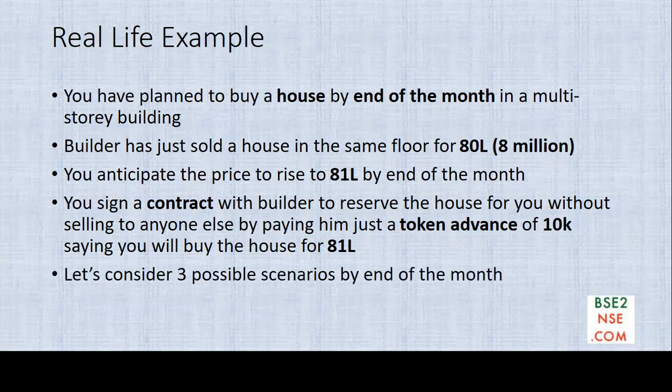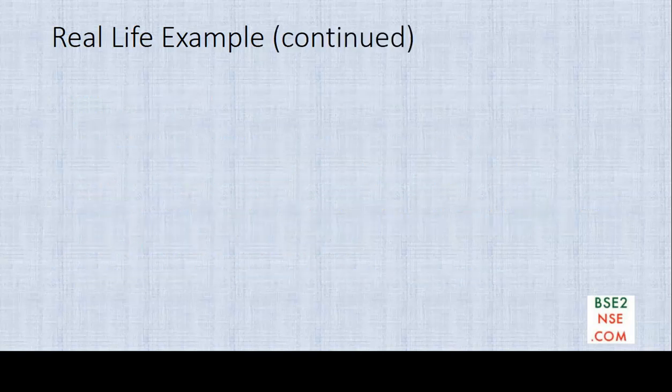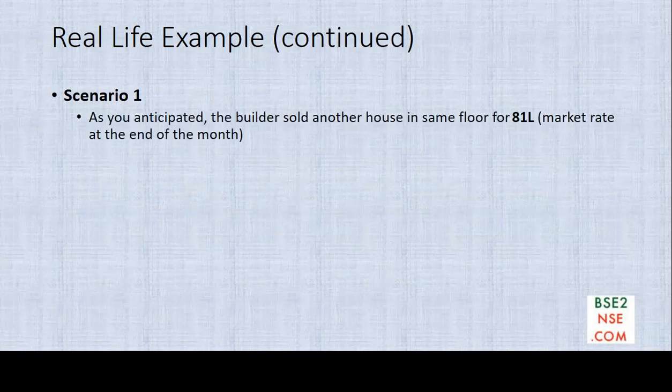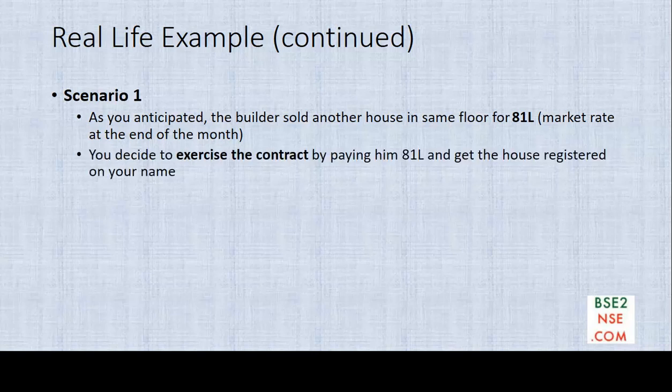You have signed the contract. Now let us consider three possible scenarios by end of this month. Scenario 1: as you anticipated, the builder managed to sell another house on the same floor for 81 lakhs, meaning that is the current market rate. Your assessment of the appreciation is perfect. You exercise the contract by paying him 81 lakhs and get the house registered on your name. You and the builder are both happy.